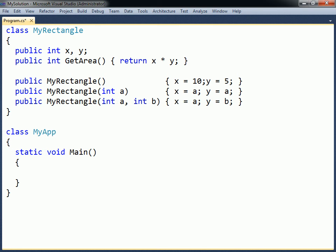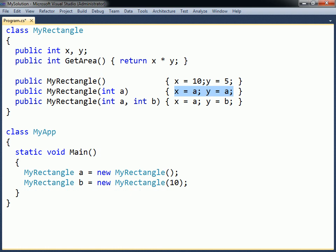To support different parameter lists, the constructor can be overloaded. In this example, the fields will be assigned default values if the class is instantiated without any arguments. With one argument both fields will be set to the specified value, and with two arguments each field will be assigned a separate value. Attempting to create an object with the wrong number of arguments, or with incorrect data types, will result in a compile-time error, just as with any other method.